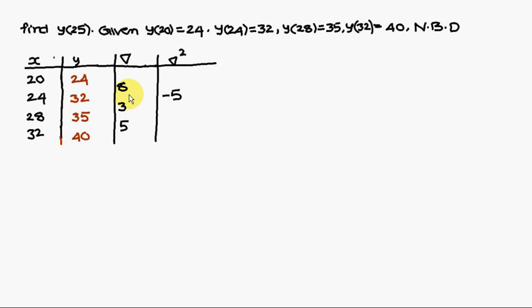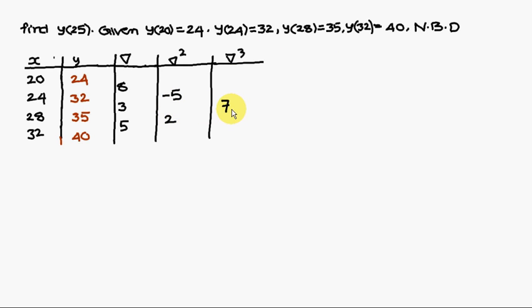Similarly, 3 minus 8 gives minus 5, written here. Then 5 minus 3 is plus 2. Next, 2 plus 5 gives 7, written here. This is the way to construct a difference table.